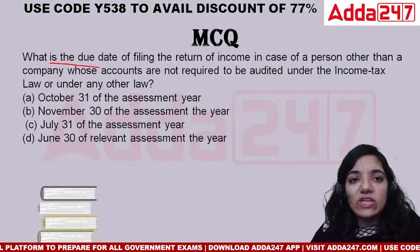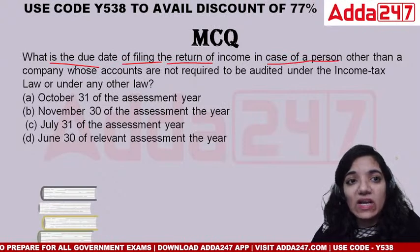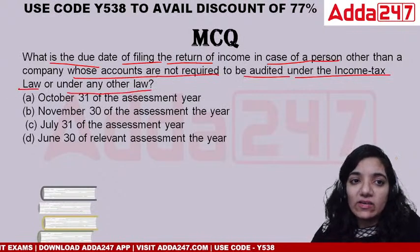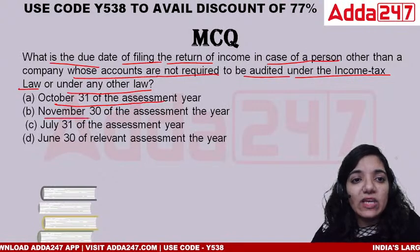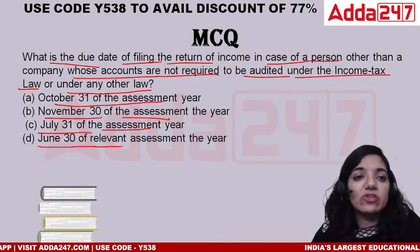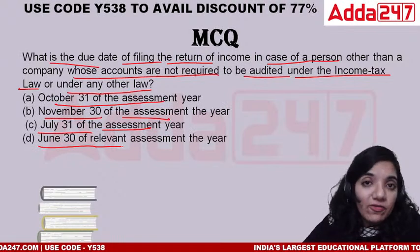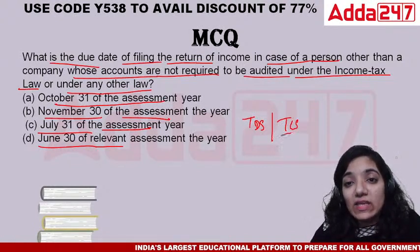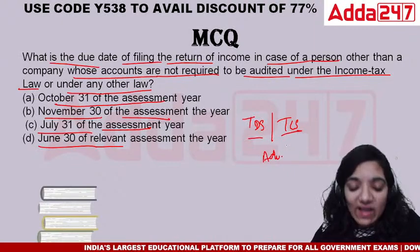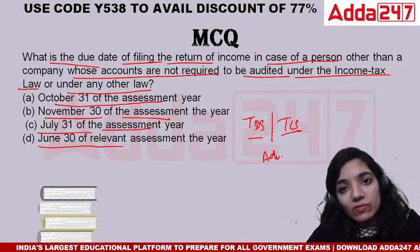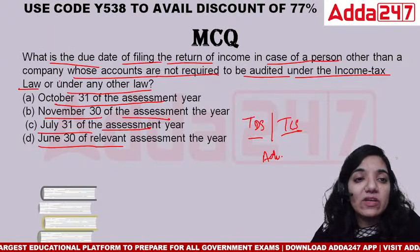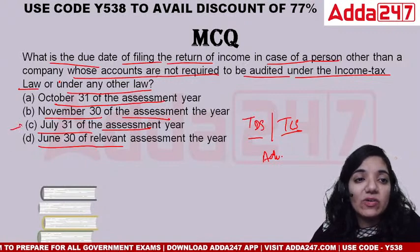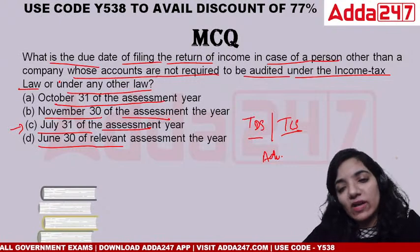What is the due date of filing the return of income for a person other than a company whose accounts are not required to be audited under income tax law or any other law? October 31, November 30, July 31, or June? The due date for individuals and HUF where audit is not required is July 31 of the assessment year — like this time, July 31, 2022.